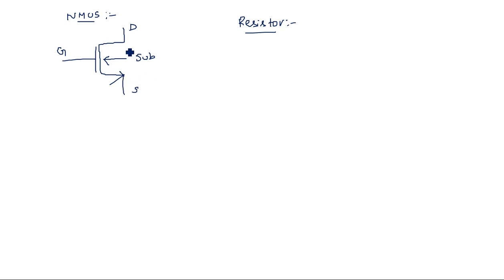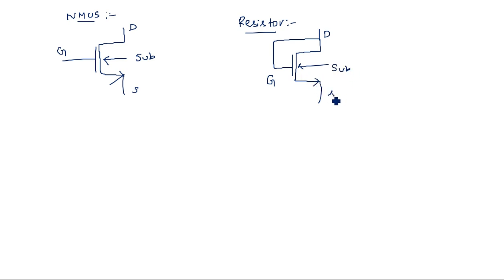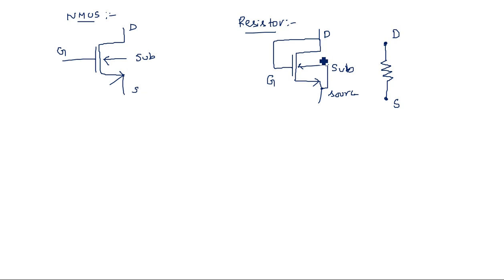To create a resistor from an NMOS FET, we short-circuit the gate and drain terminals, which gives a low resistance path. Here, the gate and drain terminals are connected together. The source and substrate are always connected together as well. This results in a two-terminal device between drain and source — there is no separate gate or substrate terminal exposed. This resistance is called RDS, or the on-resistance, representing a low resistance path between drain and source.